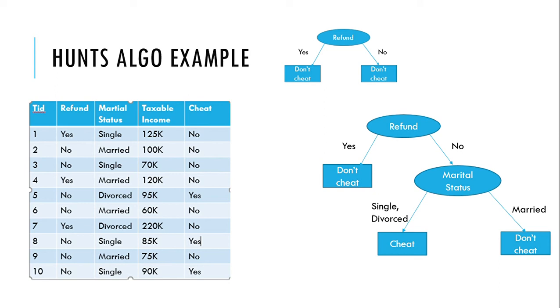Your taxable income is not defined in categories but it is a continuous quantity, so we call it a continuous column. And the last column, cheat, is nothing but the output class or we can also call it an output label.